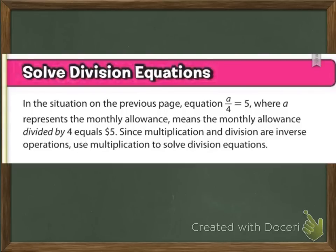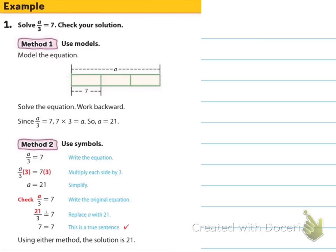All right, in this situation on the previous page, equation A divided by 4 equals 5, where A represents the monthly allowance, means that the monthly allowance divided by 4 equals 5. So we took that monthly allowance and divided it by 4 equal points, and each point was going to be $5. Since multiplication and division are inverse operations, use multiplication to solve division equations. So that inverse operation, how do we get the variable by itself?